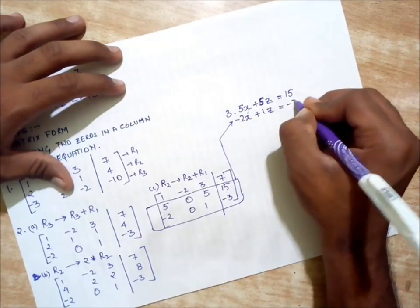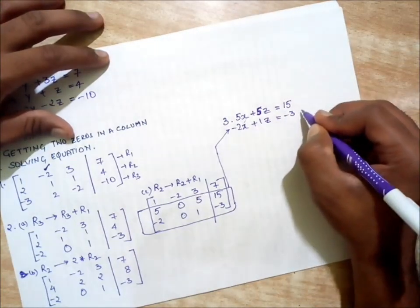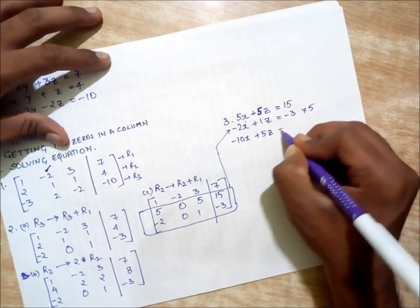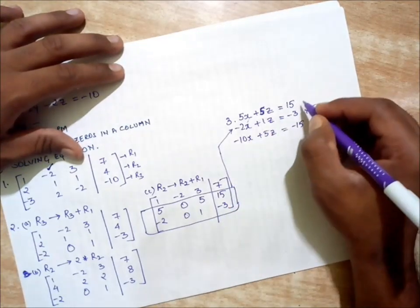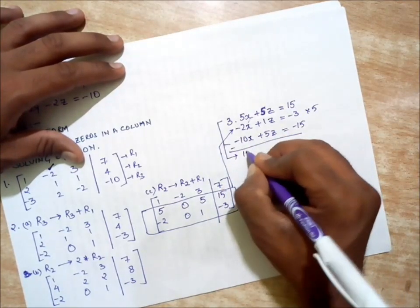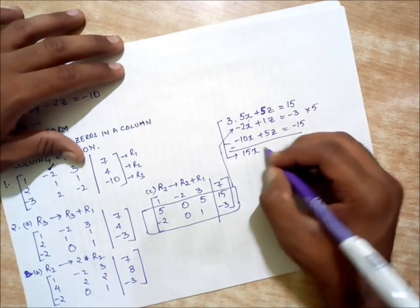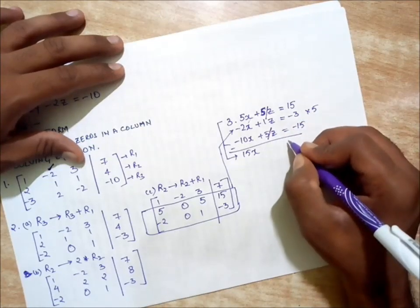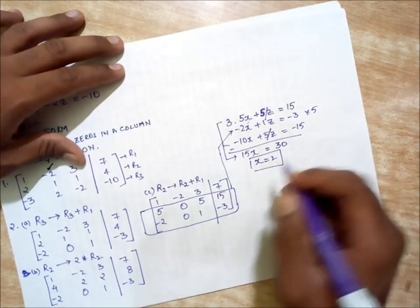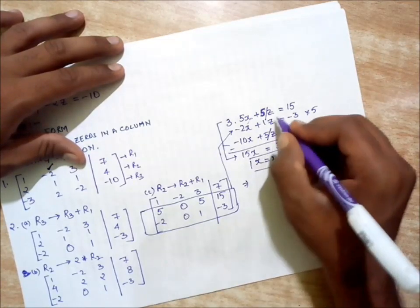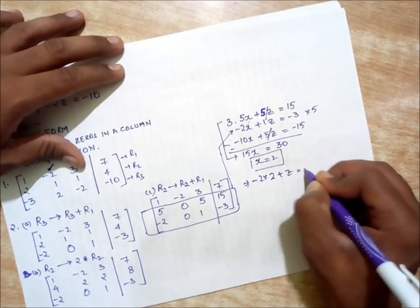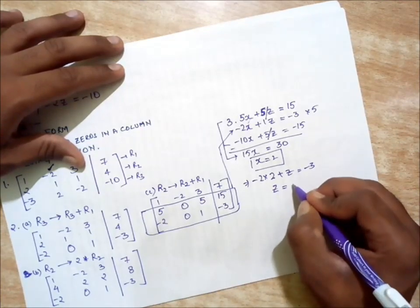Now you can simply solve this by the old technique. I'll be multiplying the second equation with 5, giving -10X plus 5Z equals -15. I'll be subtracting these two equations. If I subtract them, I'll be getting 15X and zero Z. Here I'm getting 30 because 15 minus -15 is 30, so X is equal to 2.